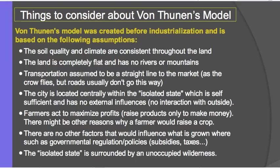He also assumed that the city, the market center, is located in the center of this isolated state — which is not always going to be the case; it might be to one side or the other. And he's also assuming that this little city is self-sufficient, with no external influences or interaction with other communities. It grows all the food it needs and grows food only for itself — so it's very isolated, a market center with no interaction with other communities or countries.